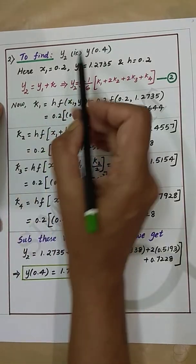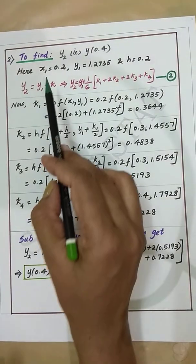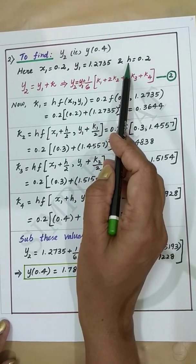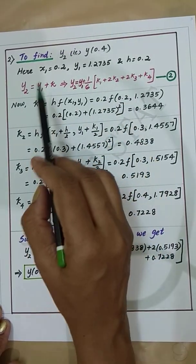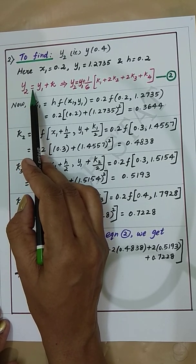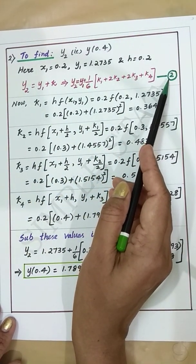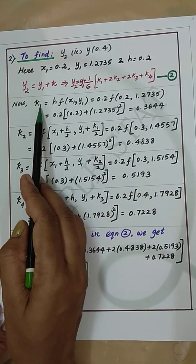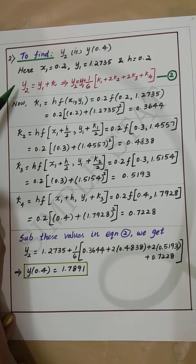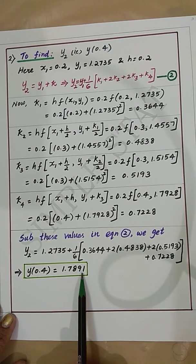To find y2, that is y(0.4): here x1 = 0.2, y1 = 1.2735 obtained from the previous step, and h = 0.2. The fourth order Runge-Kutta formula for finding y2 is y2 = y1 + k, denoted as equation number 2. We find k1, k2, k3, and k4, then substituting these values into equation 2, we get y2 = 1.7891.